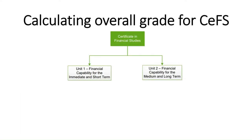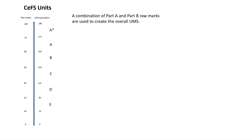Calculating the grade for Certificate of Financial Studies — as we know, we do Unit 1 and Unit 2. Each of those units is graded out of UMS, or uniform mark scheme, and each of these units is out of 190. So if you get 100 marks out of 100 marks available, you'll get 190 UMS equivalent. 74 marks will be 171, 66 marks will be 152, etc.